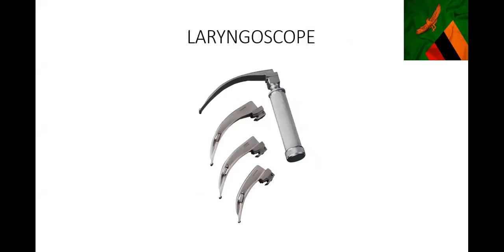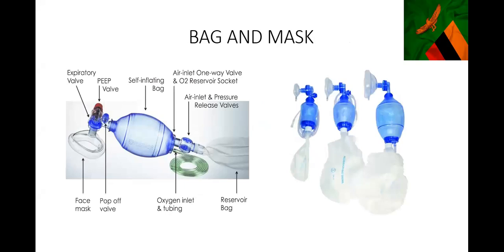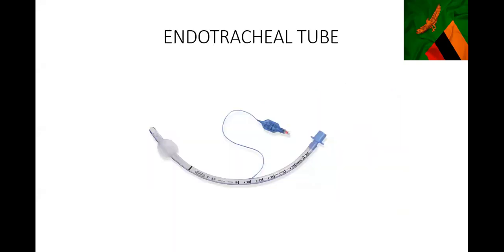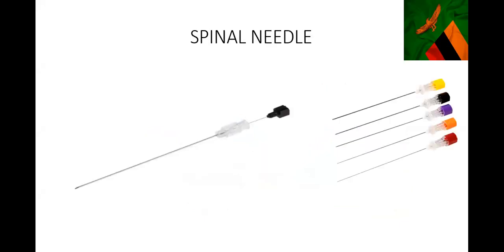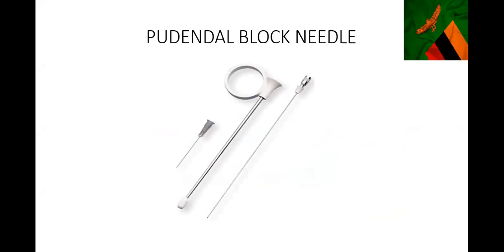Then we have the laryngoscope - you should be able to identify it. You should also be able to identify the bag and mask and the parts of the bag-and-mask system. This is an endotracheal tube - you should be able to identify it easily during your OSCE exam. This is an oropharyngeal airway - also identify this easily in your exam. There's a spinal needle, used to inject in the spine for procedures like C-sections and spinal anesthesia. And this is a pudendal block needle - similar to a spinal needle but a bit different, for pudendal block anesthesia during obstetric vaginal procedures.